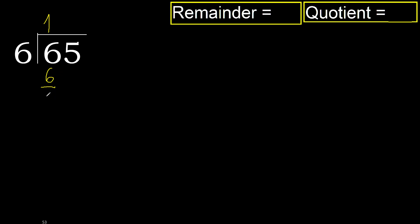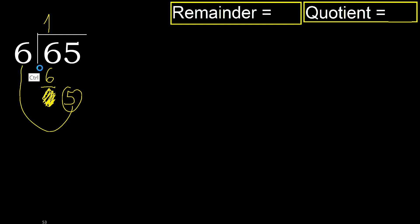6 minus 6 is 0. Next, eliminate 0 on this side. 5 is less, therefore next.